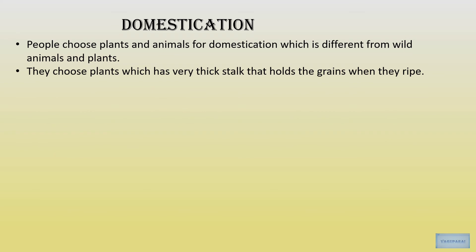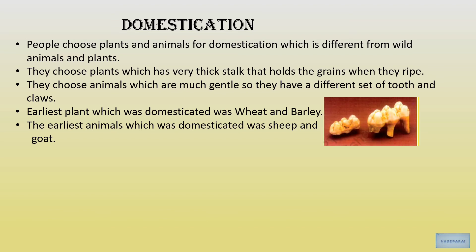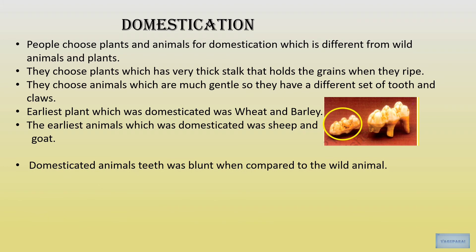This brings us to the word domestication. People chose plants and animals for domestication that were different from wild ones. They chose plants with thick stalks that held grains well when ripe. They chose gentle animals with a different set of teeth and claws. The earliest plants domesticated were wheat and barley. The earliest animals domesticated were sheep and goat, which had teeth not as sharp as wild animals.